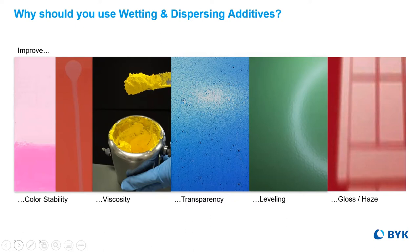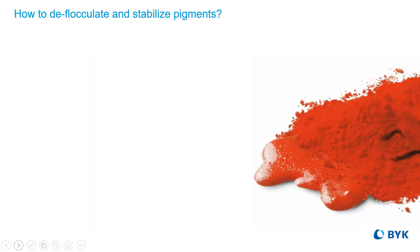Most obvious would be coloristic properties like color stability, transparency, or hide. But viscosity, gloss, and flow and leveling can also be negatively affected. These coating properties would not be optimized if the pigments weren't properly stabilized.